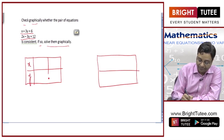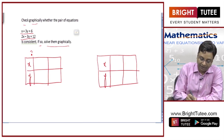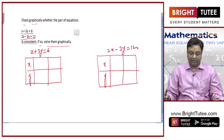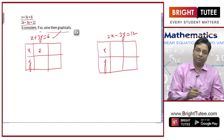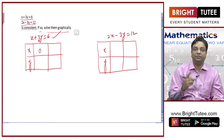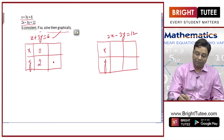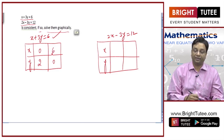This table is for x plus 3y equals 6 and this one is for 2x minus 3y equals 12. In the first equation, if I put x equal to 0, then 3y equals 6, hence y equals 2. And if I put y equal to 0, then x plus 0 equals 6, hence x equals 6.